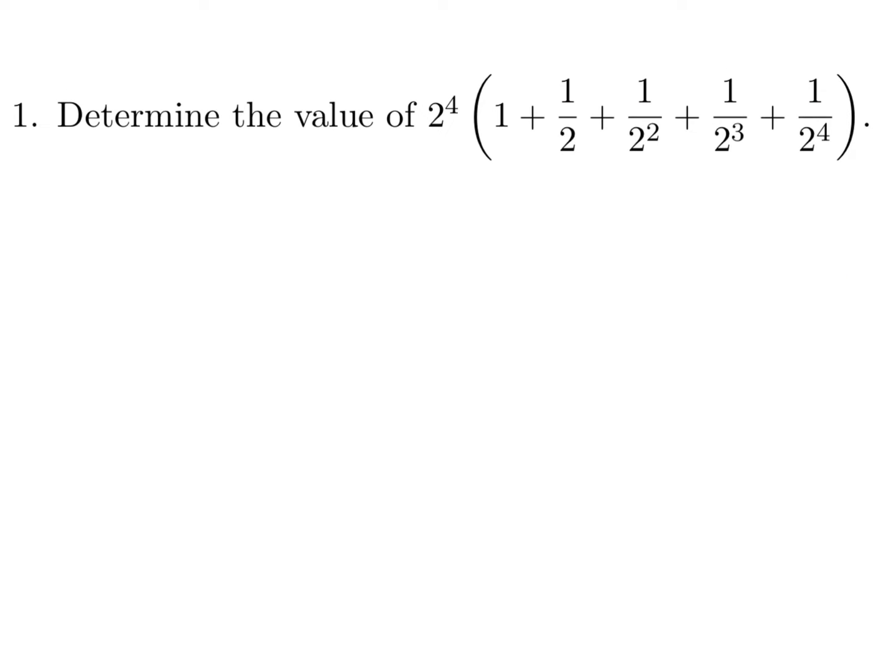Determine the value of 2 to the power of 4 times 1 plus 1 half, 1 over 2 squared, 1 over 2 to the power of 3, and 1 over 2 to the power of 4. If you just multiply through, you'll get 2 to the power of 4 plus 2 to the power of 3 plus 2 to the power of 2 plus 2 to the power of 1 and then finally just 1. And this is 16 plus 8 plus 4 plus 2 plus 1, and when you add all those numbers up, you get 31.